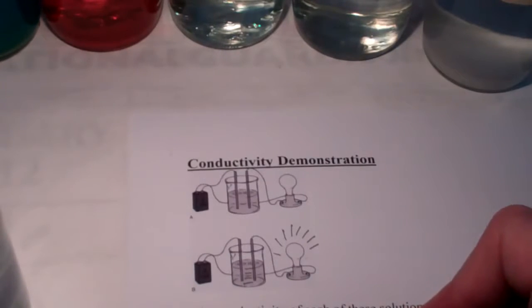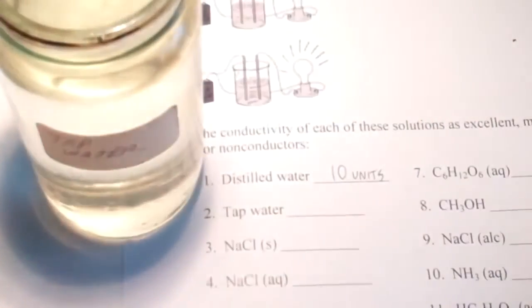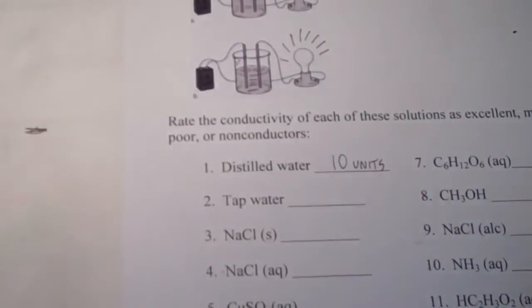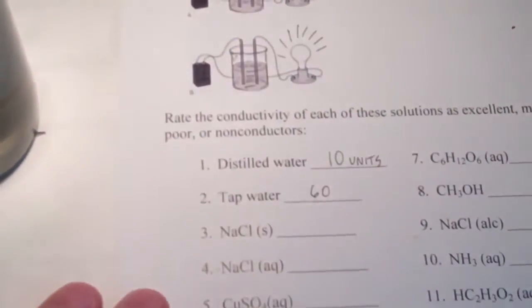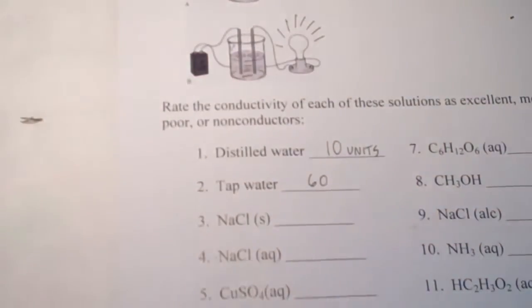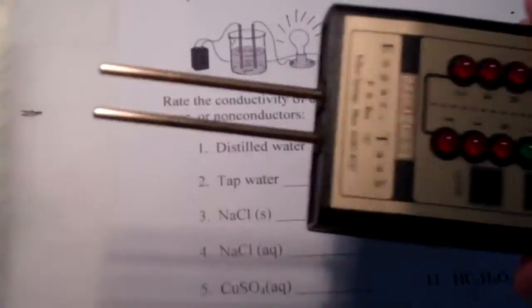Let's try tap water and see if that conducts any better or worse. Placing the conductivity meter in the tap water and pressing low — it says 10-plus — so pressing the high button, it reads about 6, giving us 60 units. Tap water conducts at 60 units, so there must be something in tap water that promotes conductivity. Between tests I'll clean the electrodes thoroughly so we don't contaminate the previous solution with the current one.